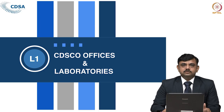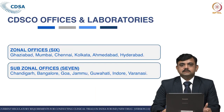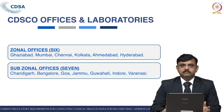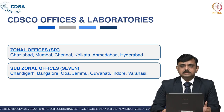Let us see the CDSCO offices and laboratories across the country. There are 6 zonal offices scattered geographically across India — east, west, south and north zones. The north zone office is at Ghaziabad; the west zone offices are at Mumbai and Ahmedabad; and the south zone offices are at Chennai and Hyderabad. There are also 7 sub-zonal offices located at Chandigarh, Bangalore, Goa, Jammu, Guwahati, Indore, and recently added Varanasi.